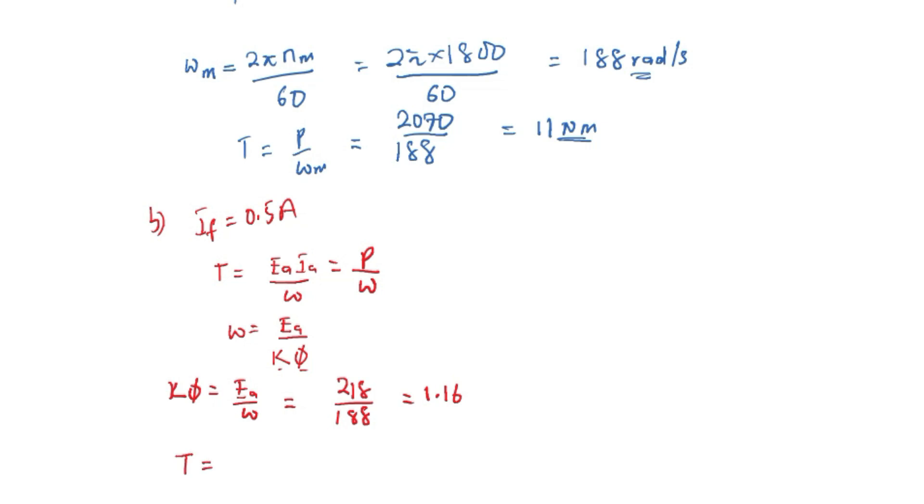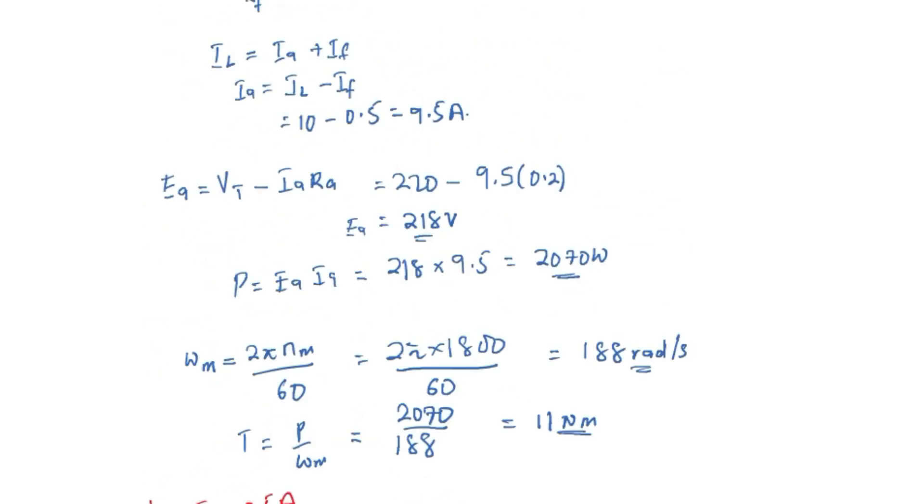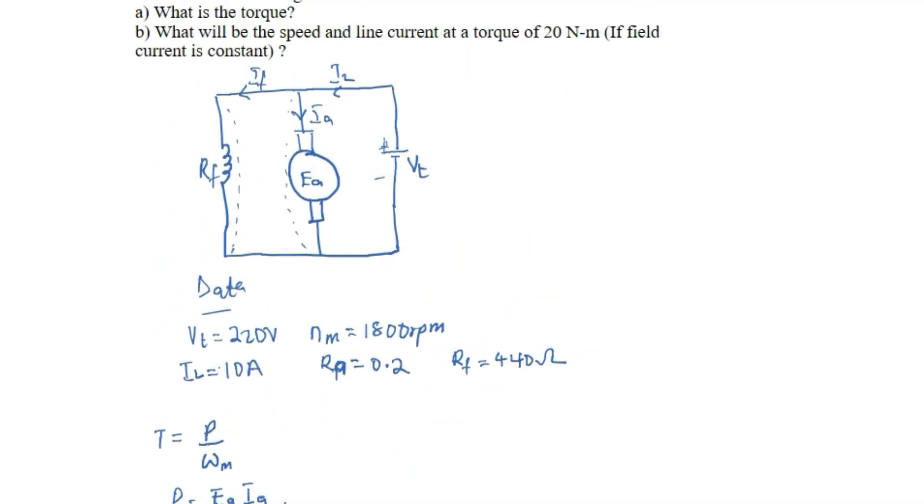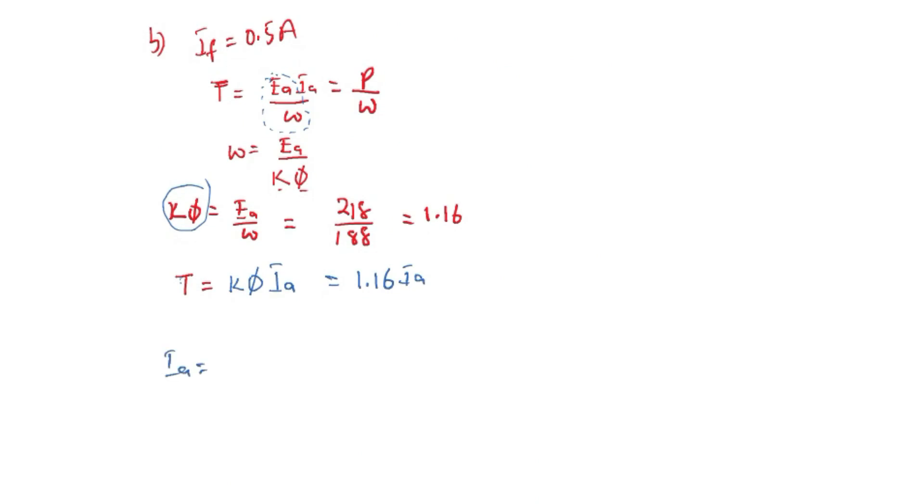Now it can be seen from this equation that torque equals EA over omega, which is the same as K phi. So this means our torque is K phi multiplied by the current IA. This is going to be 1.16 times IA. Now the torque is already given as 20 Nm, so that means our IA is going to be T over 1.16, which is 20 divided by 1.16, and this is going to be 17.3 Ampere.